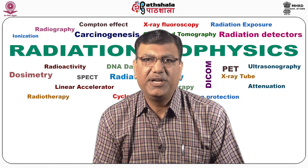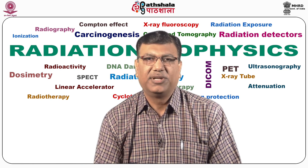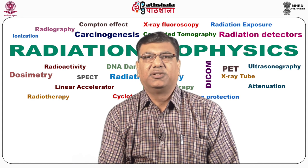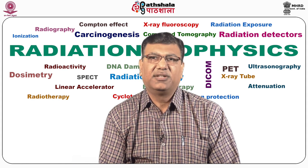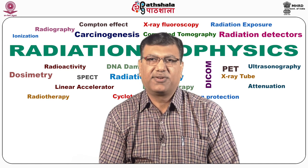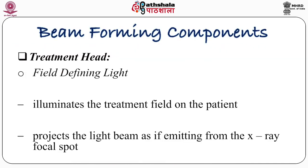The treatment head also contains a field defining light which illuminates the treatment field on the patient. We have to make sure that the radiation field and this optical light coincide with each other. It projects the light beam as if emitting from the X-ray focal spot — it is identical to the X-ray beam — which makes the treatment more accurate. We are able to see visually where the X-rays are falling on the surface.